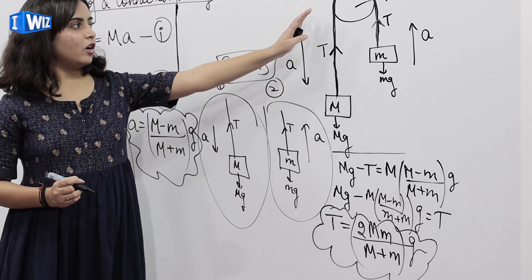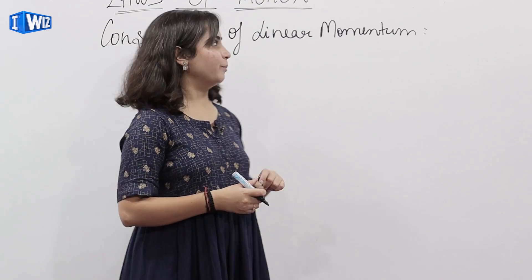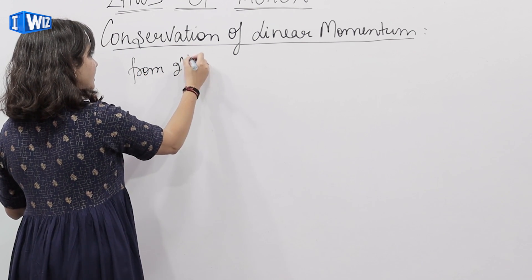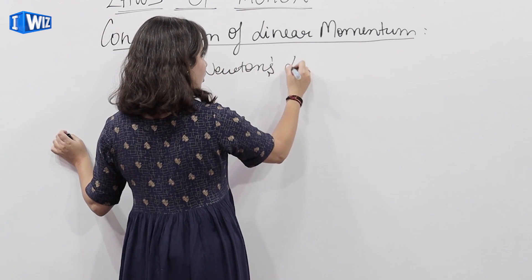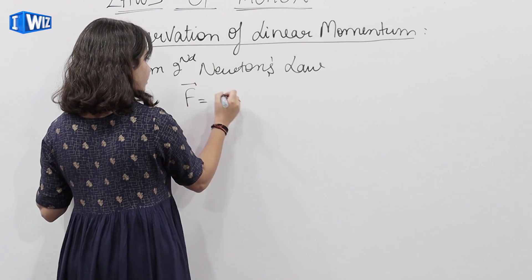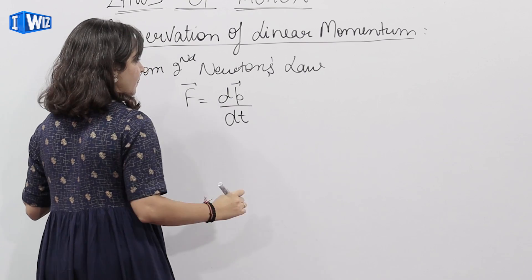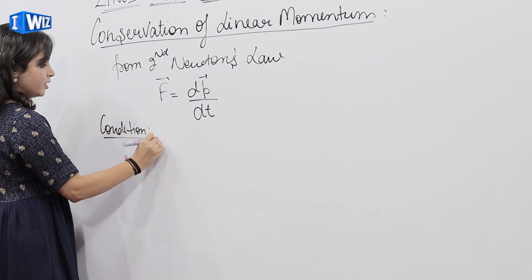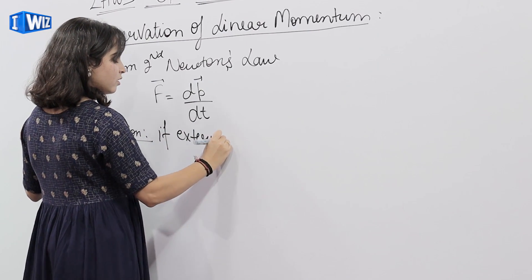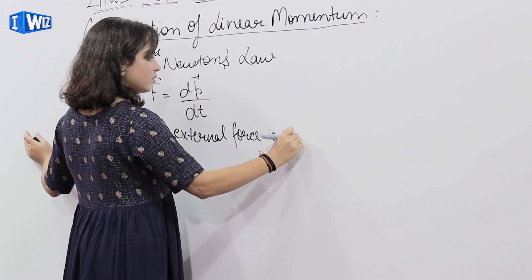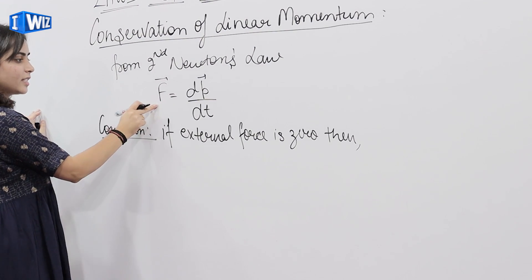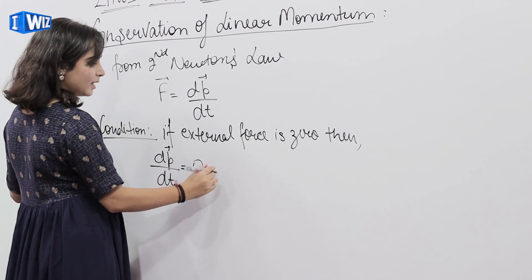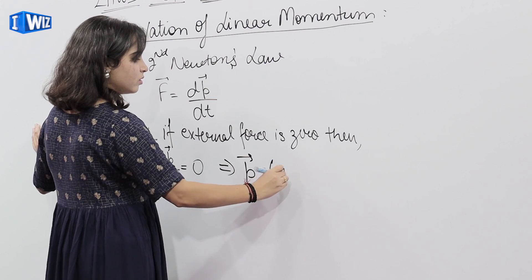Conservation of linear momentum. From Newton's second law we know F equals rate of change of momentum. Now if external force is zero — condition: if external force is zero — then dp upon dt is equals to zero, that means p is equals to constant.